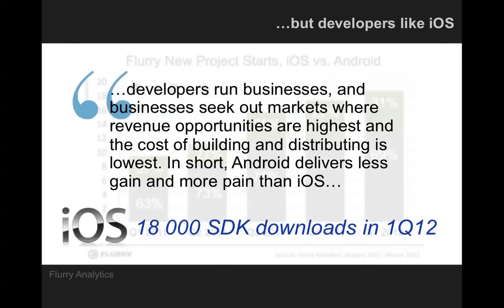Now, of course, there's iOS and Android are the two sort of preeminent operating systems on mobile. Android sort of accounts for a lot more devices, but the devices are quite, there's a very large spread of different manufacturers, different physical devices, tablets, some with buttons like this, some with buttons like that. But iOS is much more homogenous, and in a lot of ways, for developers, that makes it easier to develop on. So hence quotes like this, Android delivers less gain and more pain than iOS. Developers are flocking to iOS, hoping to build the next Angry Birds or Instagram. 18,000 software development kit downloads in the first quarter of this year alone.